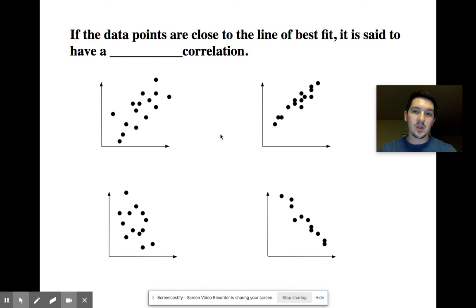So if the data points are close to the line of best fit, it is said to have a strong correlation. So this one right here, it is a positive correlation. But we would call it a weak correlation because the points are farther apart from that line of best fit. We still have a positive correlation, but it's a weak positive.